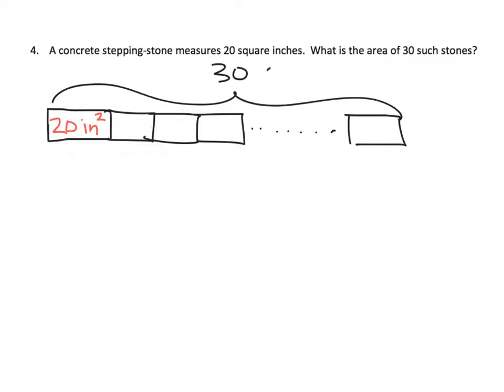That means we're going to do 30 copies of the 20 inches squared. So temporarily we're going to ignore that inches squared label and we're just going to focus on that 30 times 20.